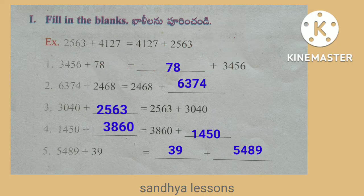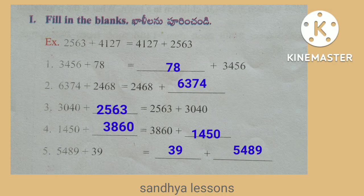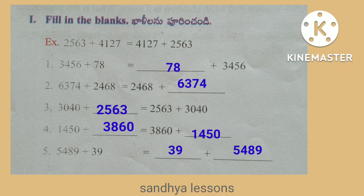3,456 plus 78 equals 78 plus 3,456. 6,374 plus 2,468 equals 2,468 plus 6,374. 3,040 plus 2,563 equals 2,563 plus 3,040. 1,450 plus 3,860 equals 3,860 plus 1,450. 5,489 plus 39 equals 39 plus 5,489.